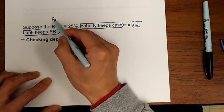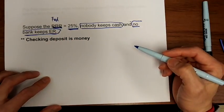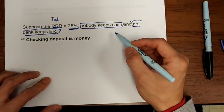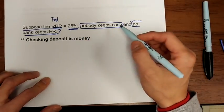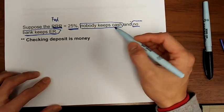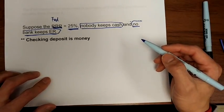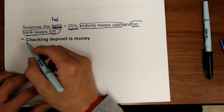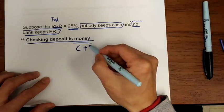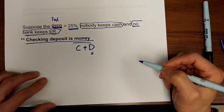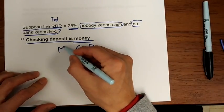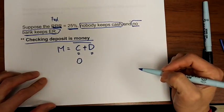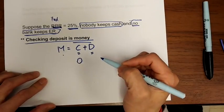Suppose the Fed sets the required reserve ratio at 25%. That means when a commercial bank receives a $100 deposit, they must keep 25% — that is $25 — in reserve, at minimum, as required by the Fed. Since nobody keeps cash, currency in this economy is always equal to zero. Therefore, money supply equals the total checking deposits.